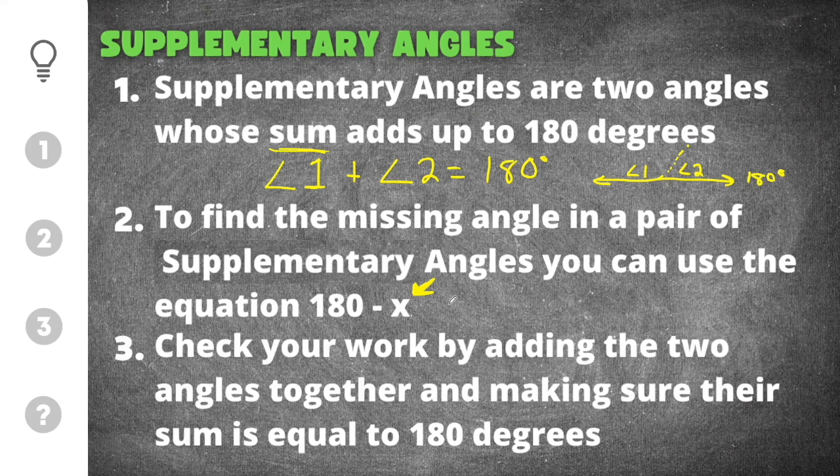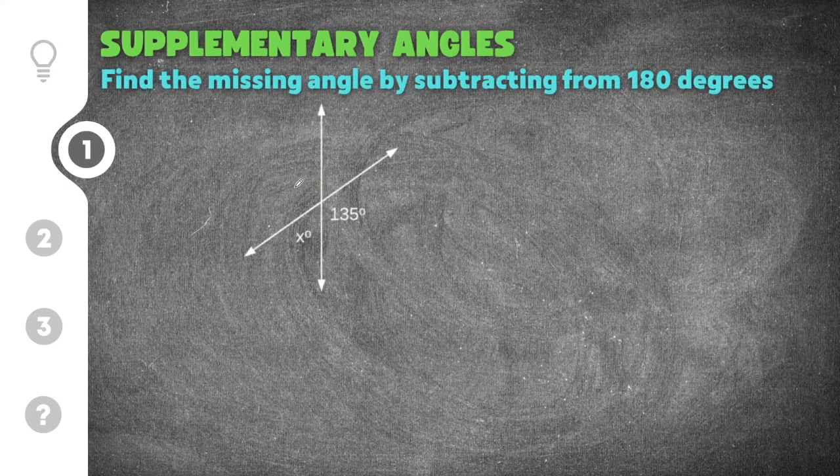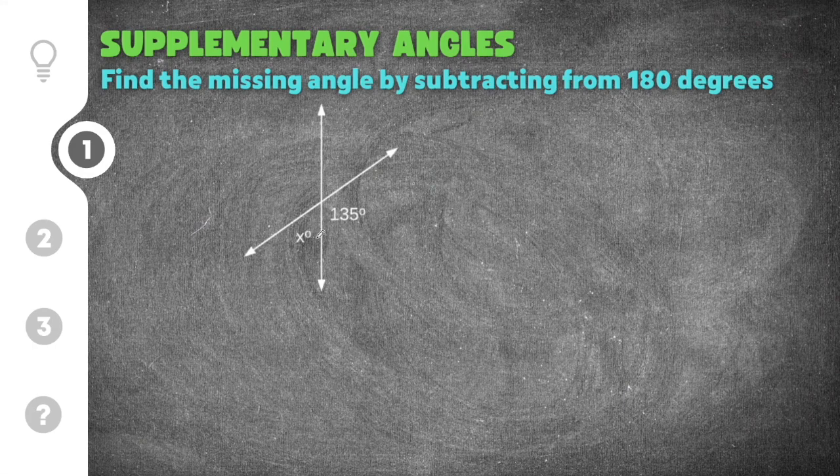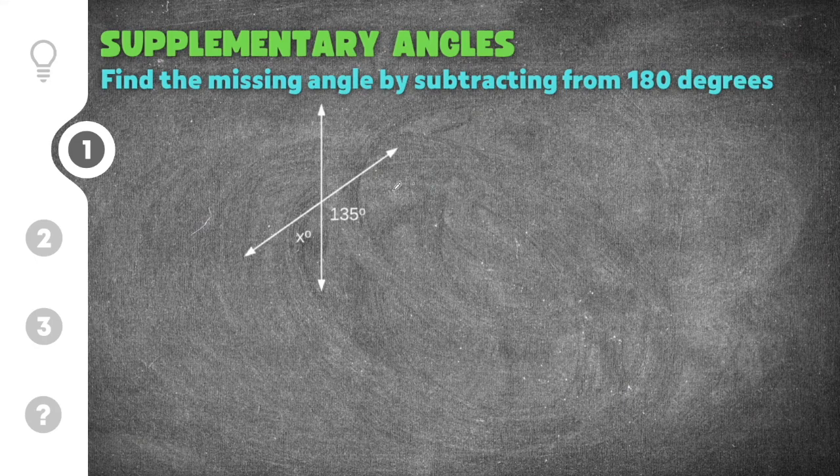Alright let's go ahead and jump down to our first practice problem on supplementary angles. So you can see we have a diagram here. This gives us two angles. We have 135 degrees and we have a missing angle which is x. This is the angle we don't know.